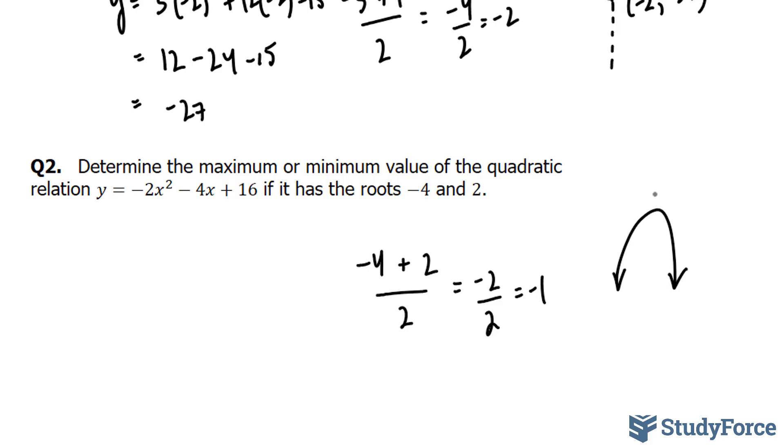So this right here, the point right here, will have an x coordinate of negative 1, and we're seeking the y coordinate now. To do that, we are going to take this negative 1 and plug it back into the equation.